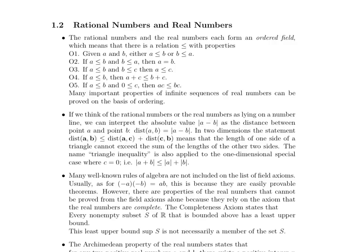If we think of the rational numbers or the real numbers as lying on a number line, we can interpret the absolute value of the quantity a minus b as the distance between point a and point b, which can also be written as this. In two dimensions,